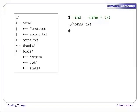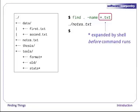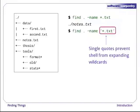Let's try matching by name with find . -name '*.txt'. We expect it to find all the text files, but it only prints out ./notes.txt. What's gone wrong? Well, if you recall, the shell expands wildcard characters like star before commands run. Since *.txt in the current directory expands to notes.txt, the command we actually ran was find . -name notes.txt. Find did what we asked — we just asked for the wrong thing. Let's try again, but this time we'll put *.txt in single quotes to prevent the shell from expanding the star wildcard. This way, find actually gets the pattern, not the expanded file name notes.txt. Sure enough, this time the output is the names of all three text files.